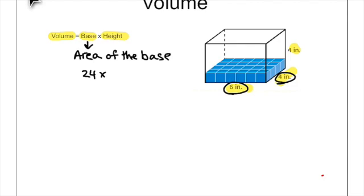Now we multiply that by our height. The height for this problem is 4 inches, so we take 24 times 4, which is 96. Our volume for this rectangular prism is 96 inches cubed — meaning 96 of these little unit cubes can fit inside. We took the area of the base, which is 24, and multiplied it by the 4 layers.